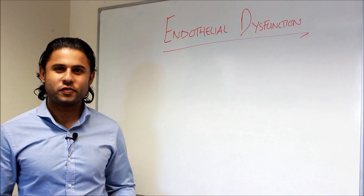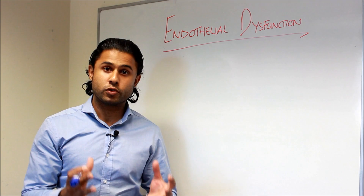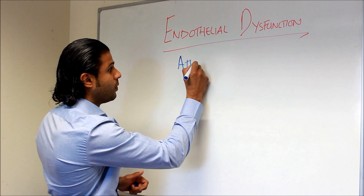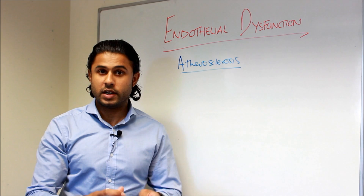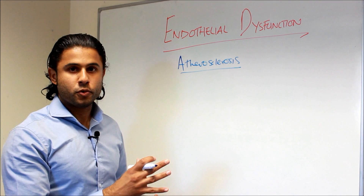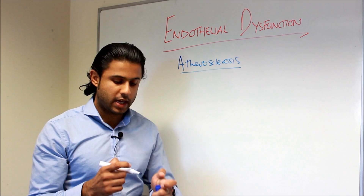Hello everybody and welcome to another edition of the Human Physiology video tutorials with me Dr. Ramir Sandhu. In today's episode we're going to talk about endothelial dysfunction, which is basically the first step of atherosclerosis. Atherosclerosis is the inflammatory damage which occurs within our blood vessels. Endothelial dysfunction is one of the key initiators of damage within the blood vessel and can lead to heart attacks and strokes if it's not halted early on. It's very important to understand what endothelial dysfunction is and to find ways to examine it and minimize any potential damage.